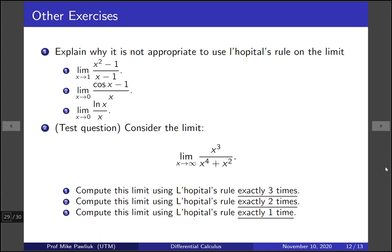Here are some other exercises for you. For each of these three limits, explain why it is not appropriate to use L'Hopital's rule on the limit. The limit as x goes to 1 of x squared minus 1 over x minus 1. The limit as x goes to 0 of cos x minus 1 over x. The limit as x goes to 0 of log x over x.